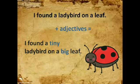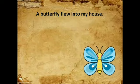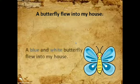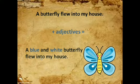One last example: a butterfly flew into my house. Where is the noun? Butterfly. Now, can you describe the butterfly? A blue and white butterfly flew into my house. Blue and white are adjectives that describe the noun butterfly. Good job!